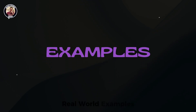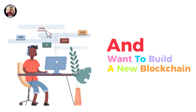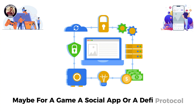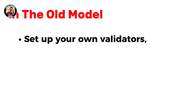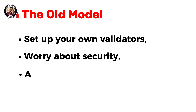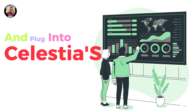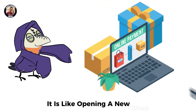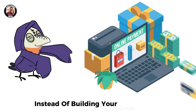Let's say you are a developer and want to build a new blockchain — maybe for a game, a social app, or a decentralized finance protocol. In the old model, you would have to set up your own validators, worry about security, and deal with infrastructure headaches. But with Celestia, you can launch your own chain in a few steps and plug into Celestia's data layer to handle storage and security. It is like opening a new shop and using Amazon Web Services for hosting, instead of building your own servers.